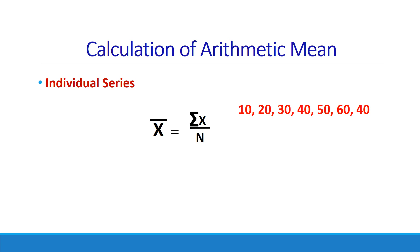What we have to do is sum up all these values: 10 plus 20 plus 30 — all these values have to be summed up, which gives us a total of 250.